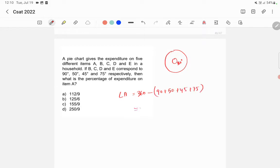So this will come 360 minus 260 which is equal to 100 degrees.